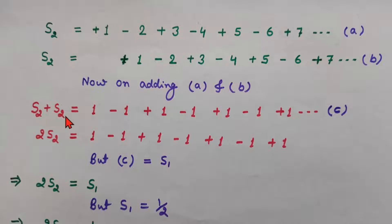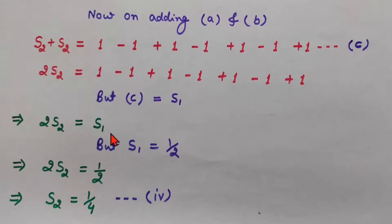So S2 plus S2 is 2S2. And this series is actually what? This is S1. And the value of S1 was actually 1 by 2. So this 2S2 has become equal to S1. 2S2 is S1. S1 is 1 by 2. So 2S2 will be 1 by 2. So from here, S2 will be 1 by 4. Let's call this equation as equation 4.